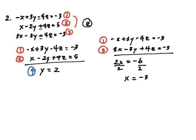Okay, so now that I have my y and x, I'm going to go ahead and substitute into, let's just say equation 1: negative x plus 3y minus 4z equals negative 3. Let's go ahead and substitute y equals 2 and x equals negative 3.